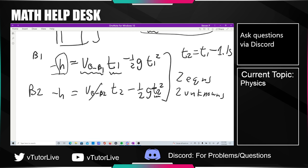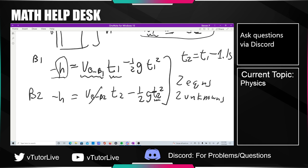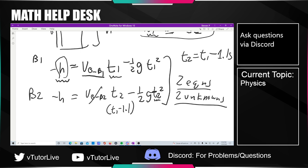Now it says: consider the same situation but let the initial speed v0 of the first ball be given and treat the height h of the building as unknown. A squiggle under h means it's unknown — what height must the building be for both balls to reach the ground at the same time for some given velocity? It changes the problem a tiny bit but fundamentally it's still two equations and two unknowns, so just solve. t2 is just t1 minus 1.1 seconds or whatever it is for your specific problem.